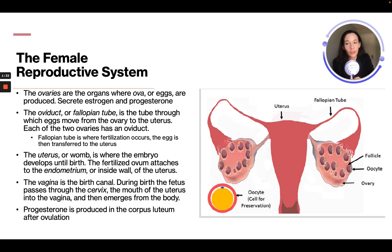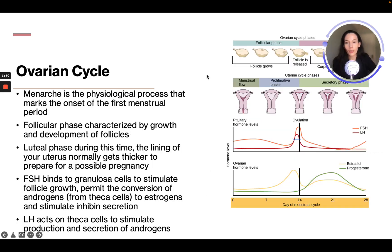During birth, the fetus passes through the cervix, which is the mouth of the uterus, into the vagina and then emerges outside of the body. Progesterone is produced in the corpus luteum after ovulation. Menarche is the physiological process that marks the onset of the first menstrual period.